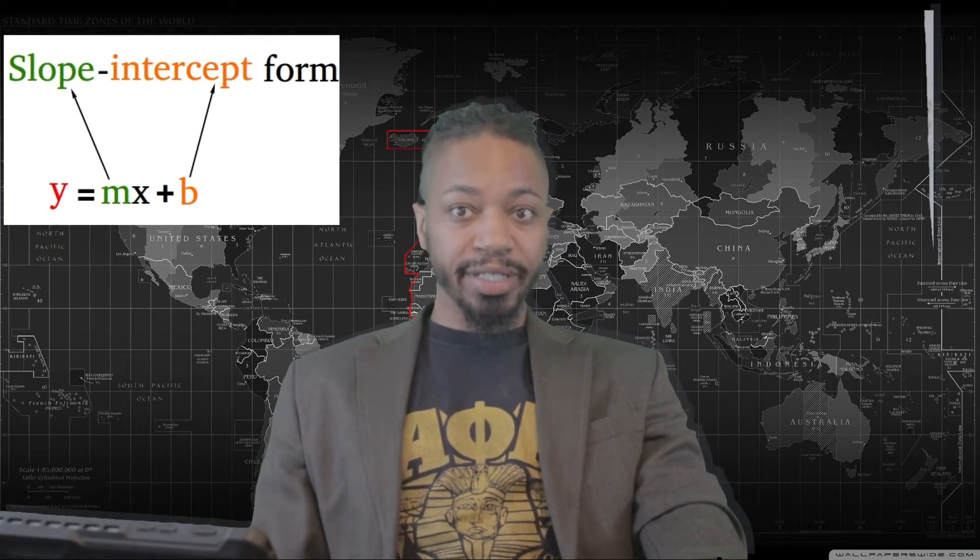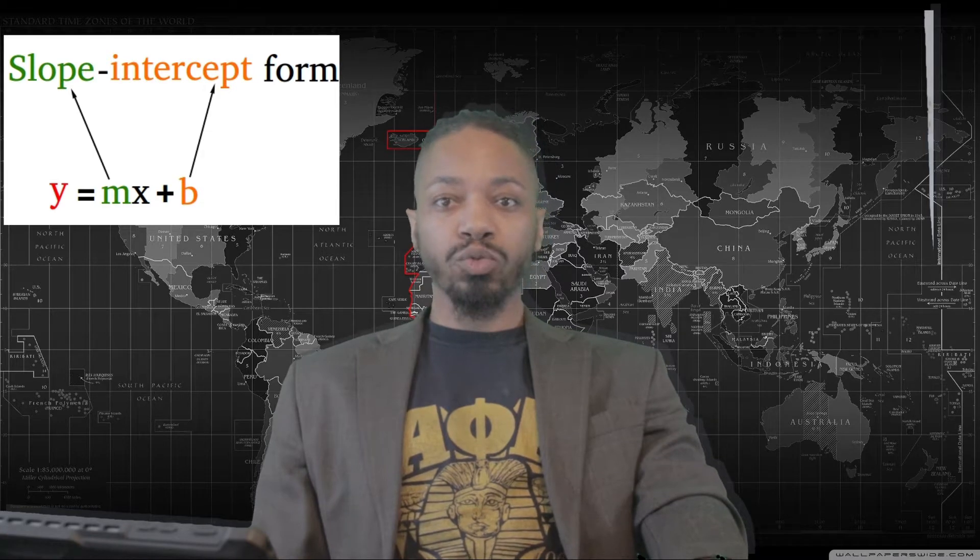Y equals mx plus b — the slope-intercept form of a line. Now, first, before we can get into our uses, let's break down what our variables are here.